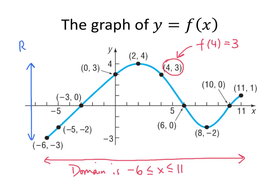So the range of our function is negative 3 less than or equal to y less than or equal to 4. So very often the domain and range are really easy to read off of the graph of our function.